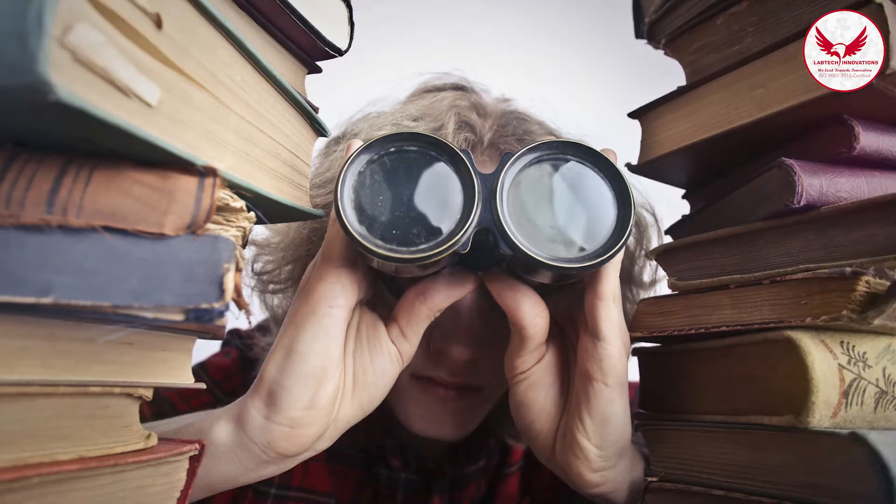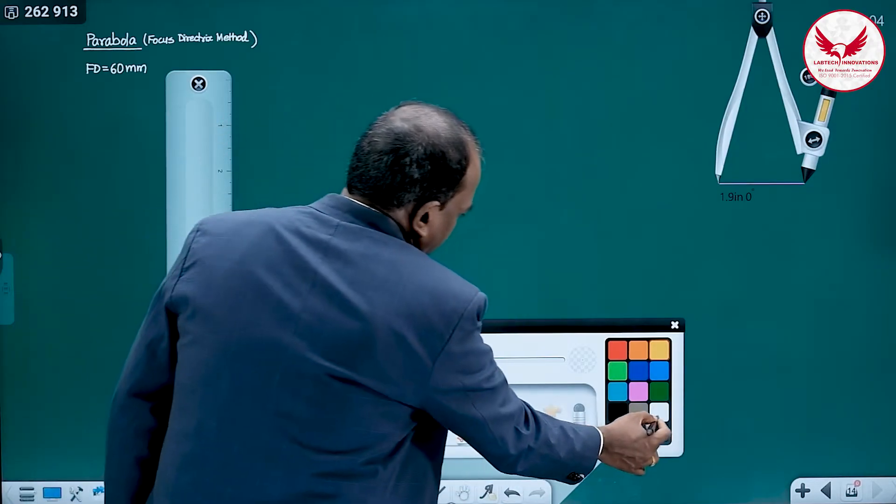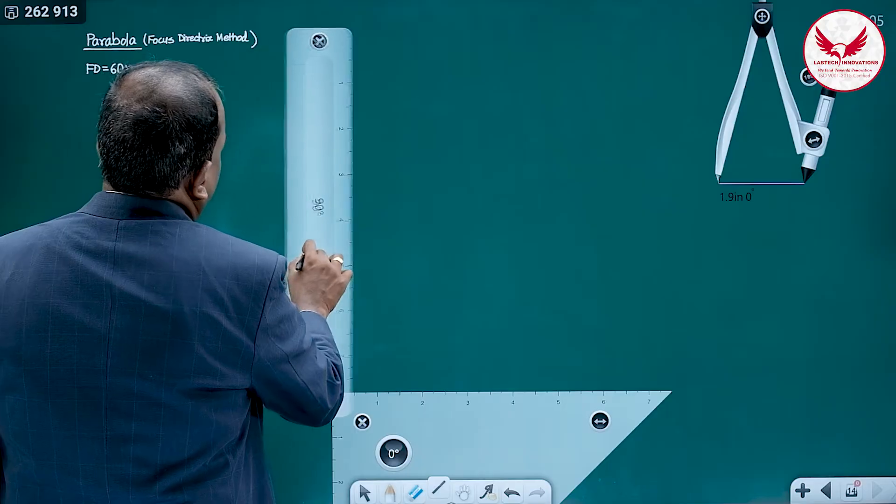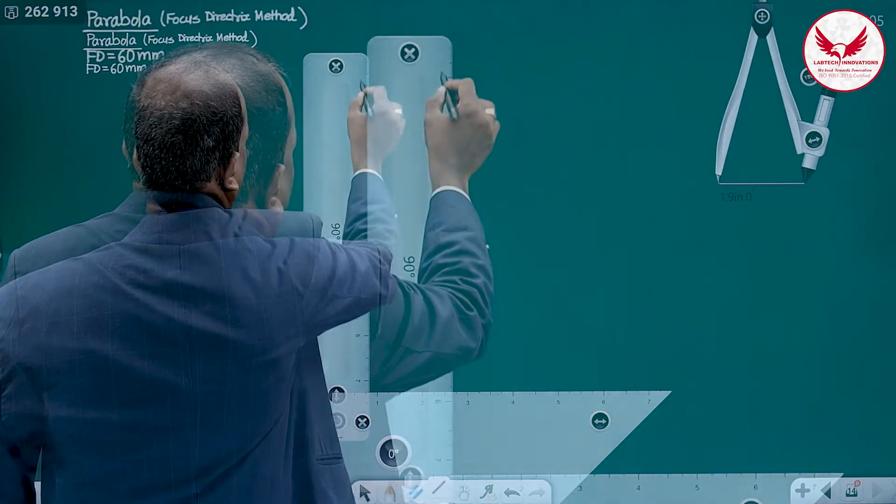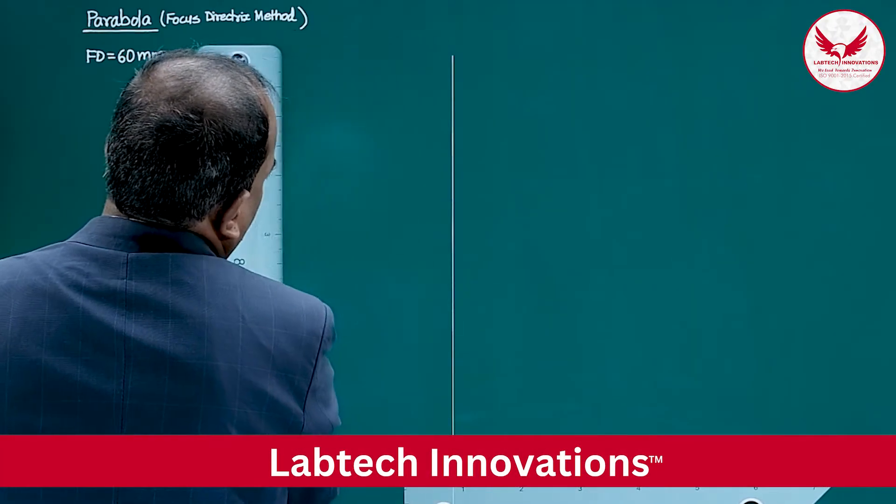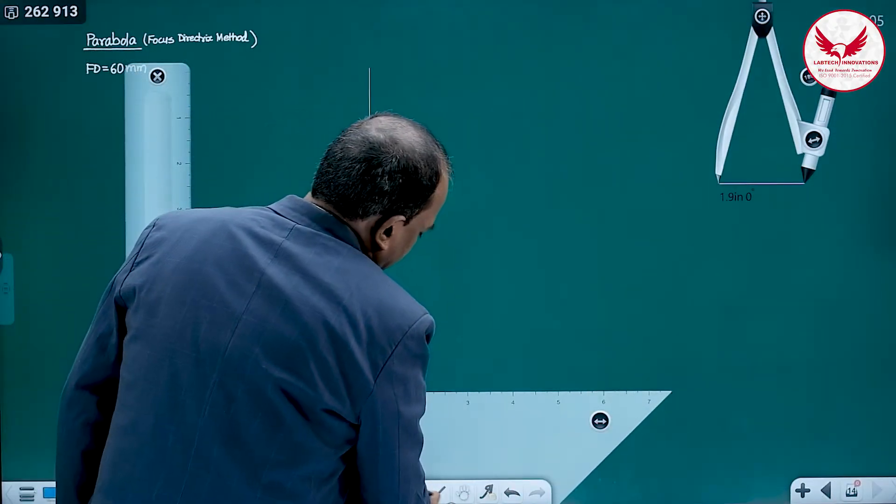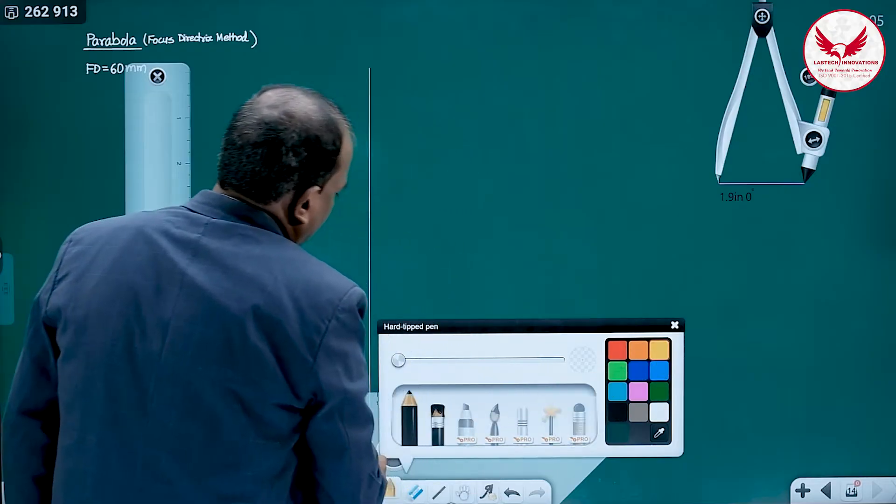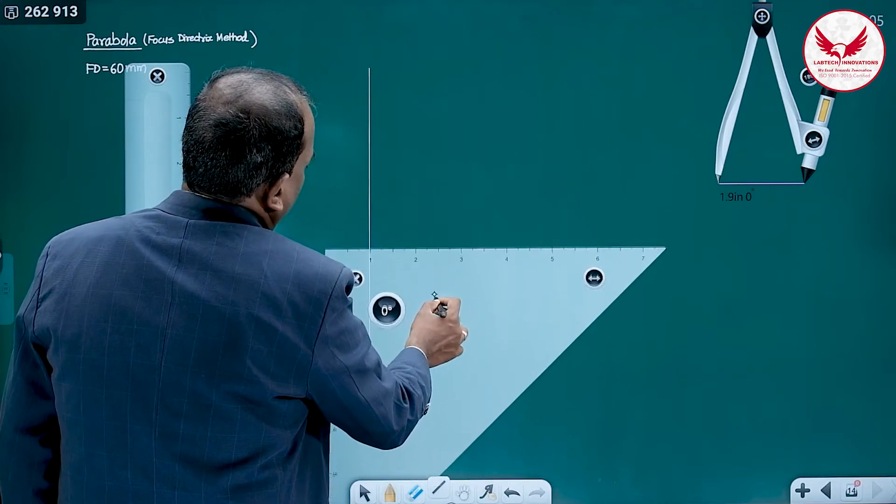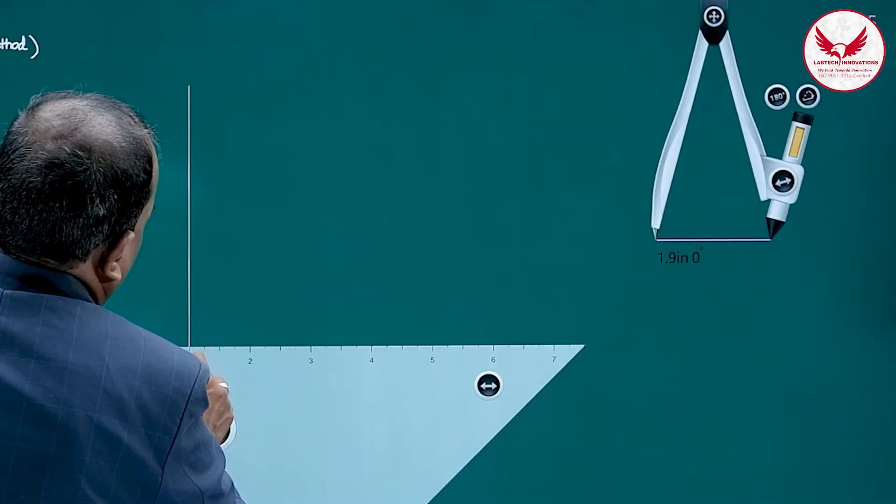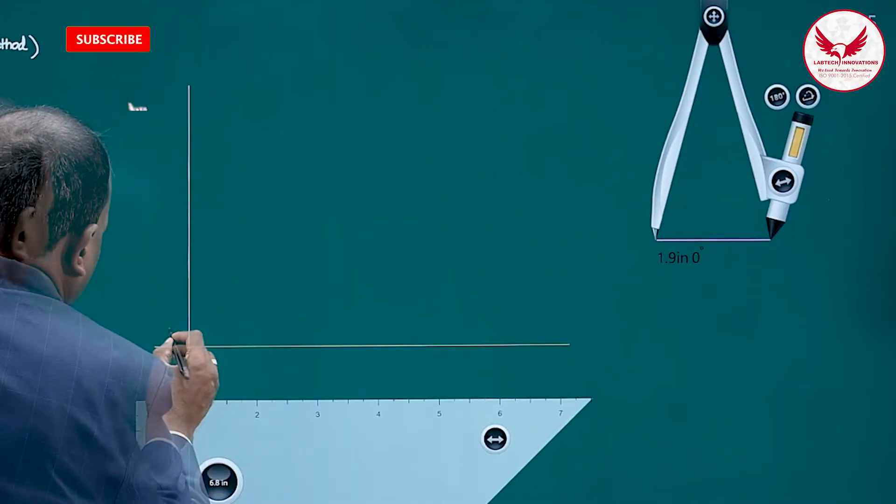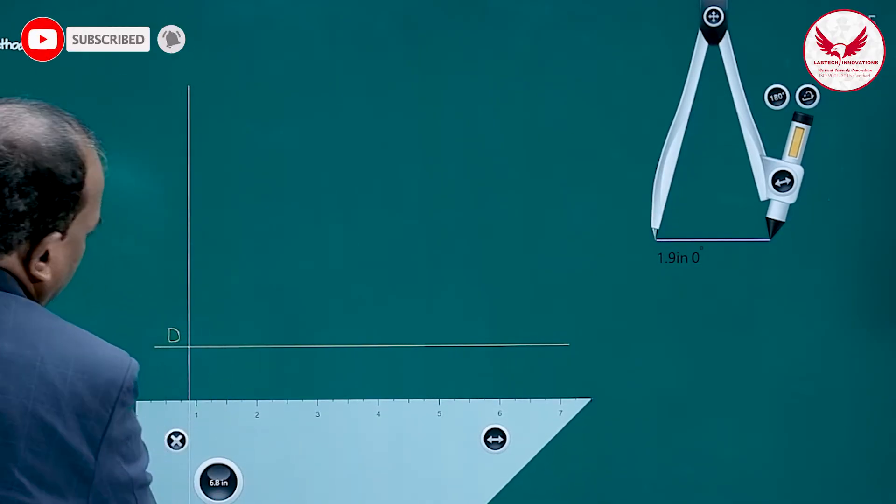Observe carefully what we have to do. First, always we have to draw the directrix line. That directrix line is going to be a straight vertical dark line. Once we draw the directrix line, immediately draw the horizontal axis line or horizontal intersecting line.